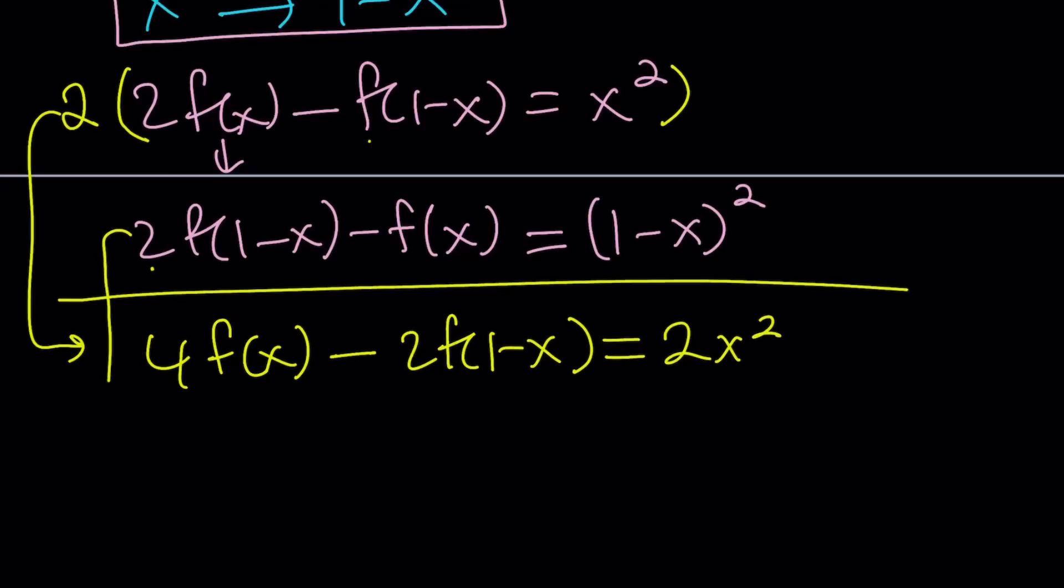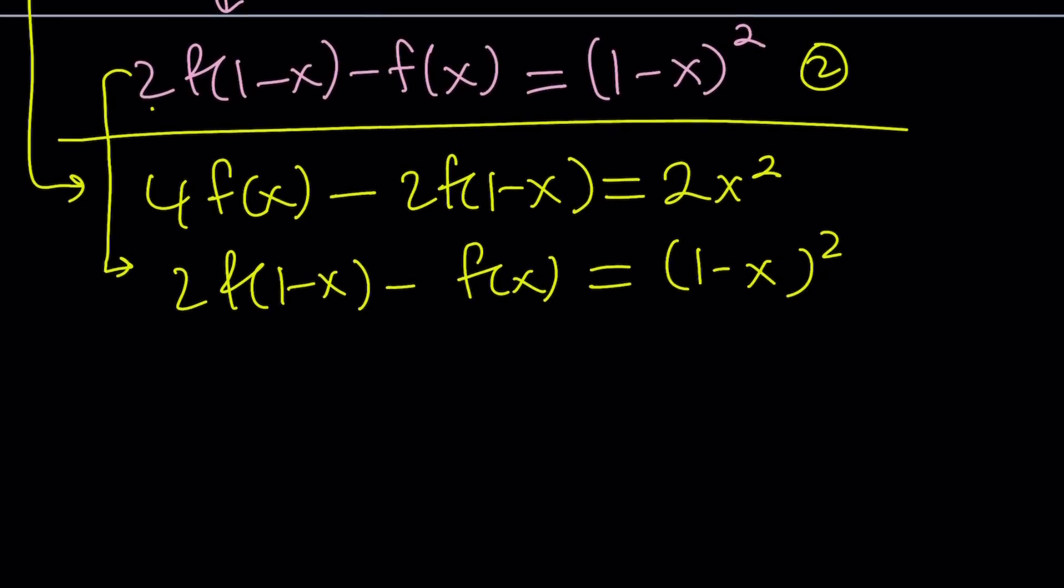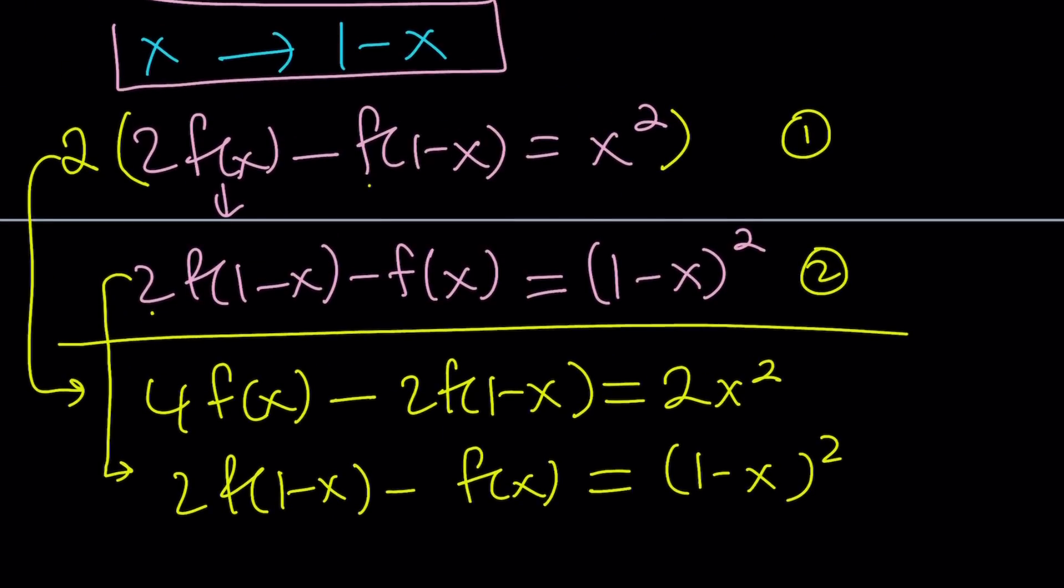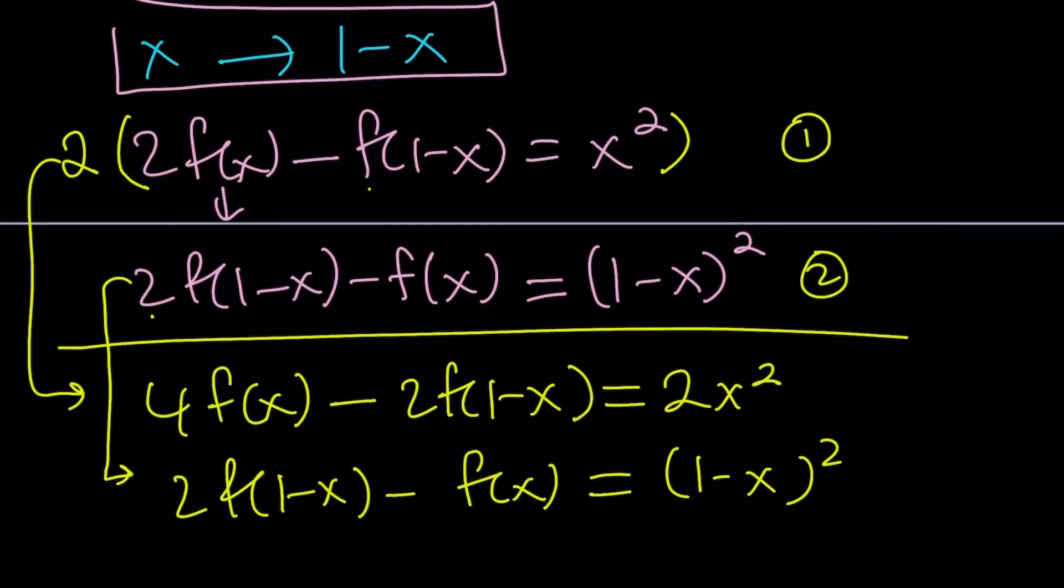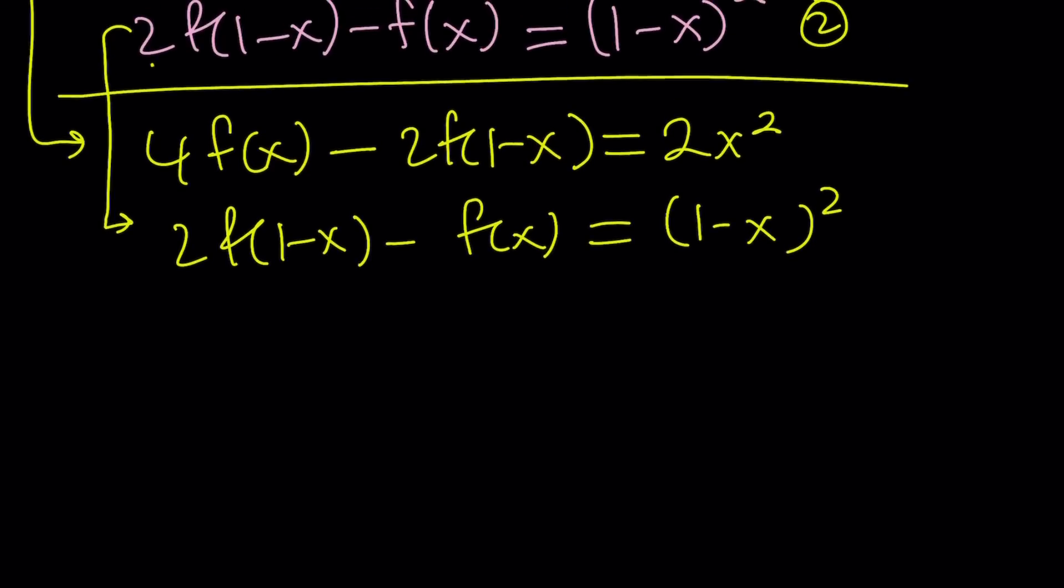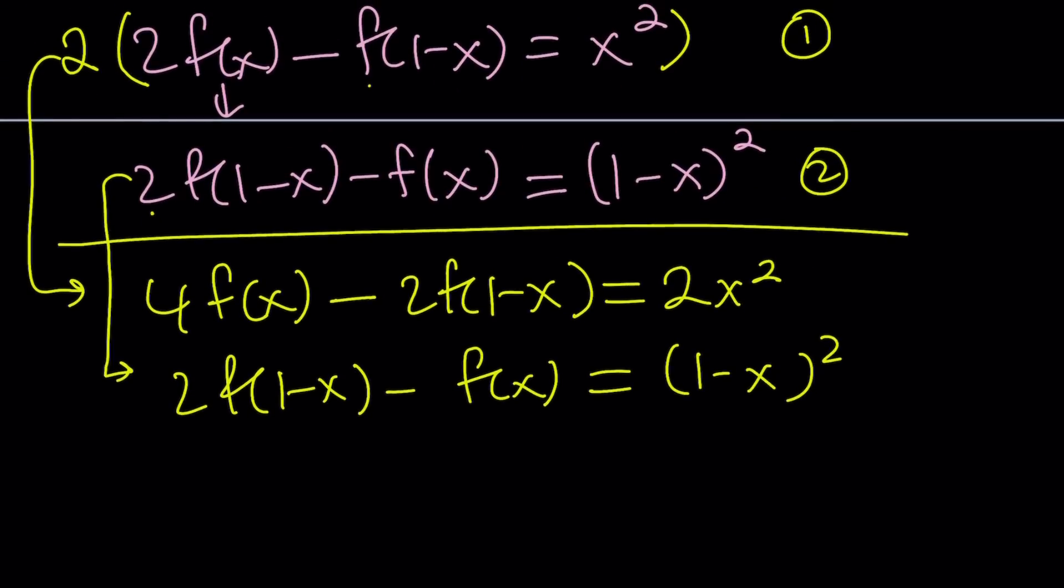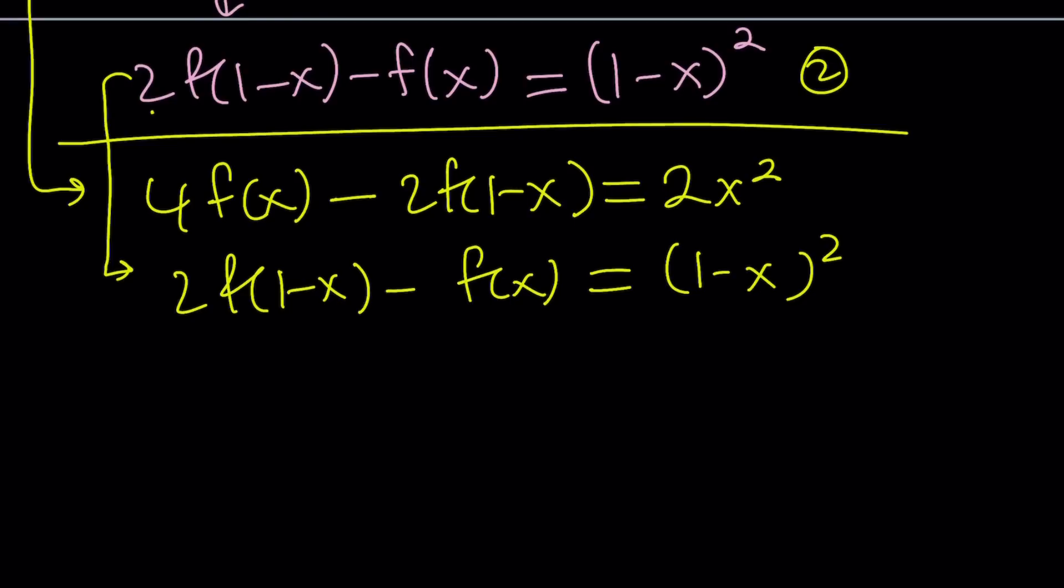Let's rewrite what happens here. After multiplication, we get 4f(x) minus 2f(1-x) equals 2x². And let me copy this equation one more time: 2f(1-x) minus f(x) equals (1-x)². We're going to use elimination, so let's add these two equations.